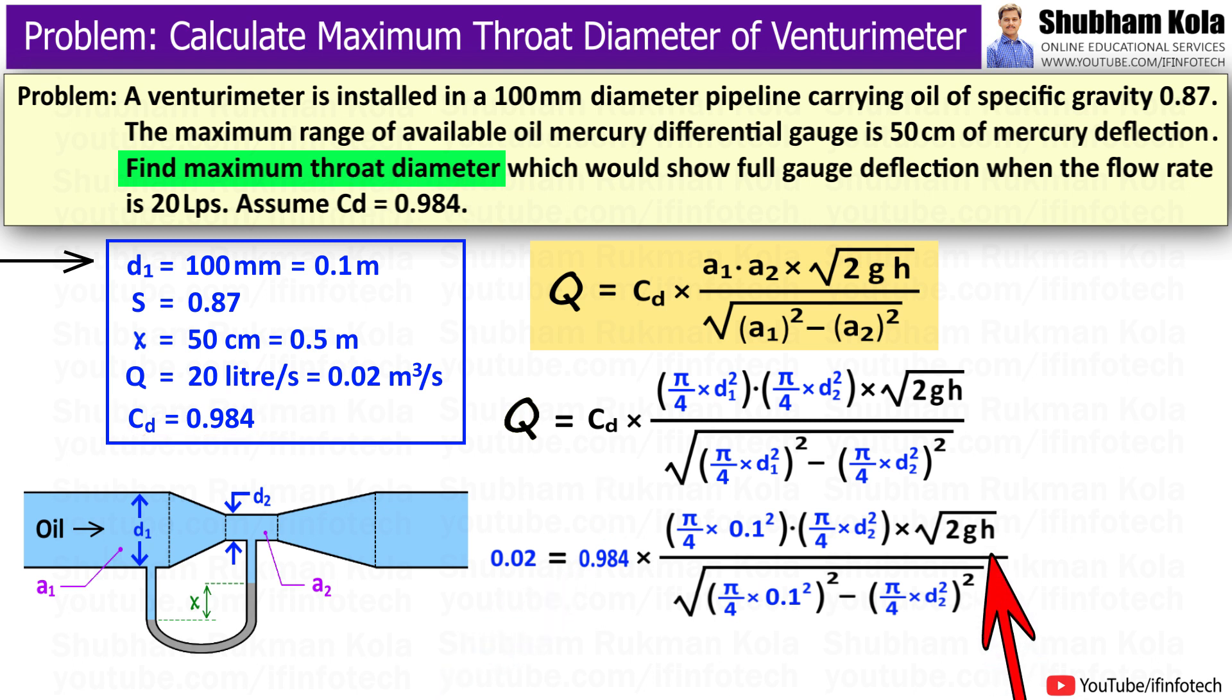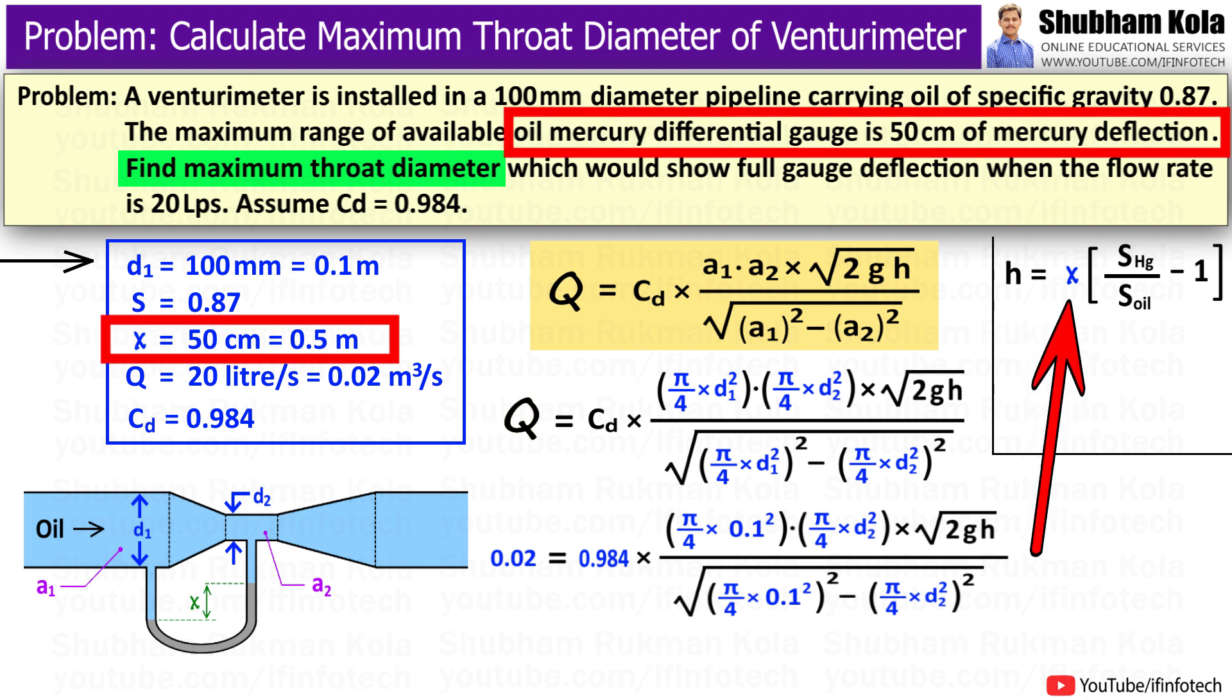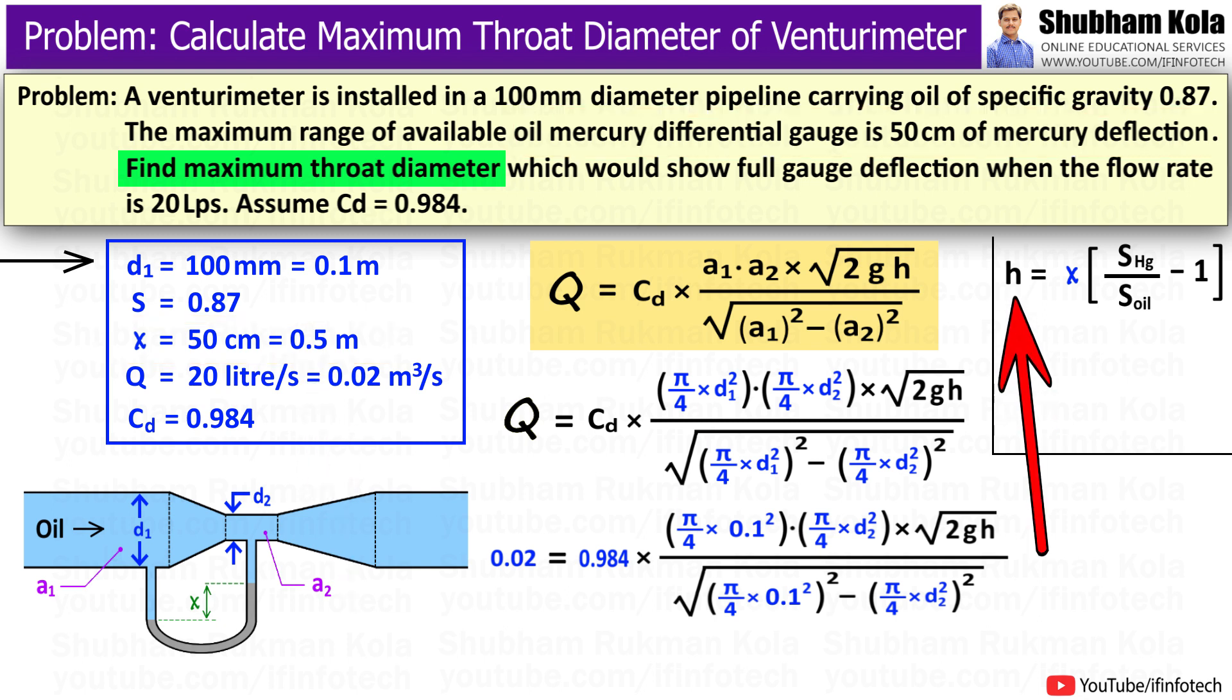Here, we have to calculate small h which is the pressure difference between inlet and throat of venturimeter. So small h can be calculated with the help of manometric reading which has given in problem as 0.5m. The formula of small h will be x into specific gravity of heavier fluid upon specific gravity of lighter fluid flowing through venturimeter minus 1.